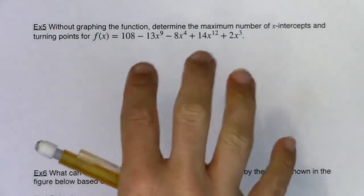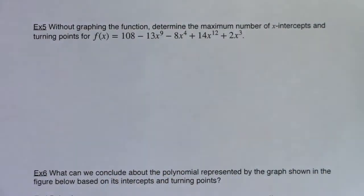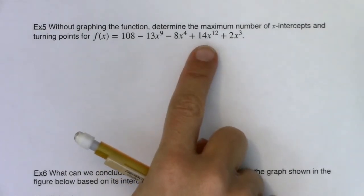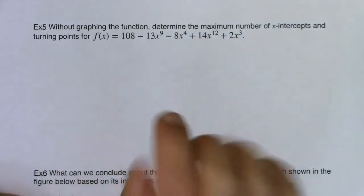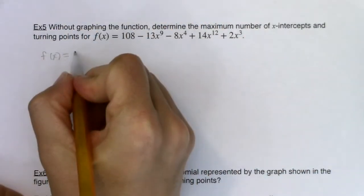All right, so the first thing I want to do with this polynomial, again, polynomial, there's five terms in here. I'm going to put them in descending powers of x. So I see x to the 12th as the degree, and then I see a 9, a 4, 3, and a constant. So let me rewrite this with descending powers of x.